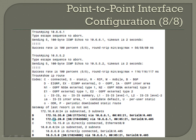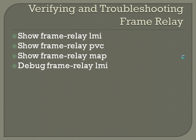That's pretty much the extent of the configuration for the preferred point-to-point with sub-interfaces Frame Relay configuration. For verifying and troubleshooting Frame Relay, we already saw a lot of these commands as we went through the configuration examples. Show frame-relay LMI and show frame-relay PVC are going to give you the LMI status — whether it's active or not — and PVC status and how that's set up.